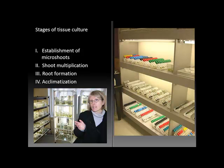The text goes through the four stages of tissue culture multiple times in the reading assignments. I'd like to quickly recap the objectives of each stage. In the establishment stage, the goal is to successfully put micro shoots — tiny little segments of plant shoots — into an aseptic culture while avoiding contamination.